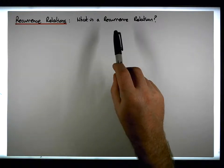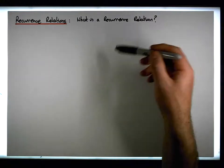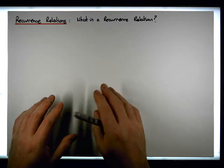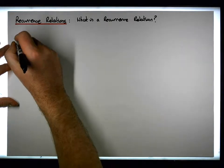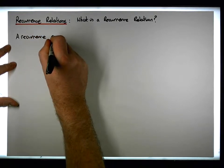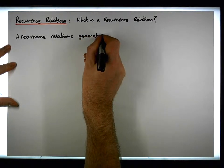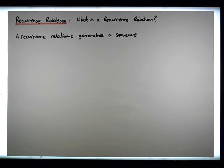Recurrence — we could also say recursive — so really what these particular structures are, are structures that allow us to generate the values or the terms within a sequence. At a very high level, a recurrence relation generates a sequence, and that's all a recurrence relation effectively is: it's some recursive definition that generates a particular sequence.